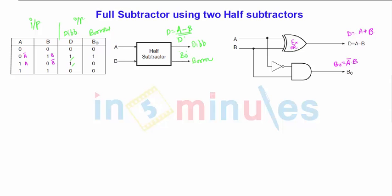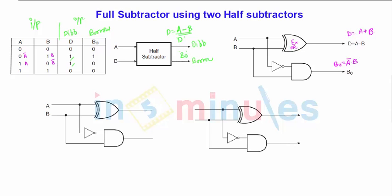So let us consider two half subtractors here. So I have half subtractor and I am taking another input as B_in, that is nothing but borrow input, along with A, B, and B_in.